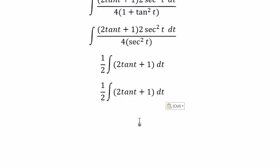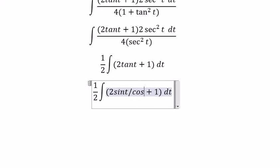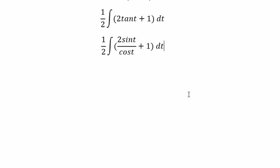Next, about tan t, we can write it as sin t over cos t. And now we can get the final answer. The integral of this one you got negative 2 ln of the absolute value of cos t, and plus t.